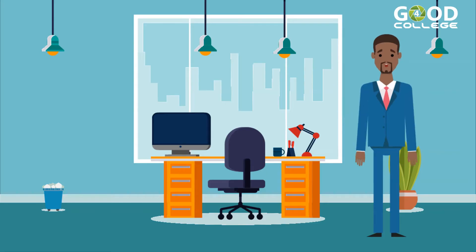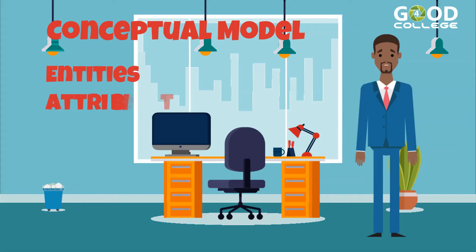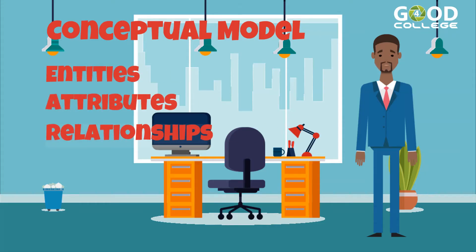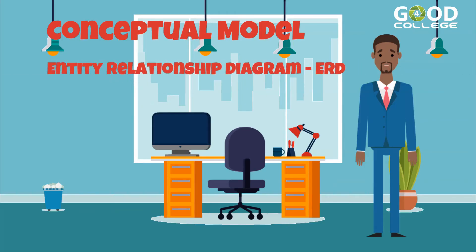In the previous class, we learned that a conceptual model is composed of three elements: entities, attributes, and relationships. Today, we will learn how to represent a conceptual model using an entity relationship diagram.